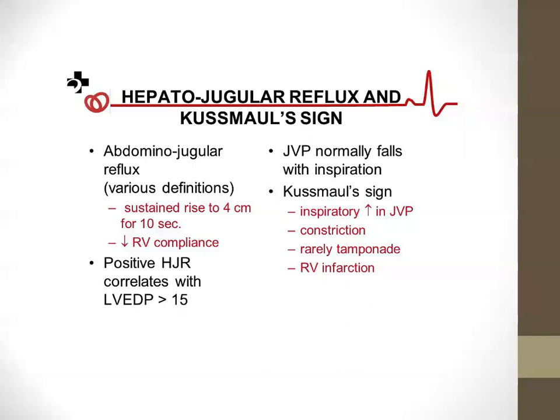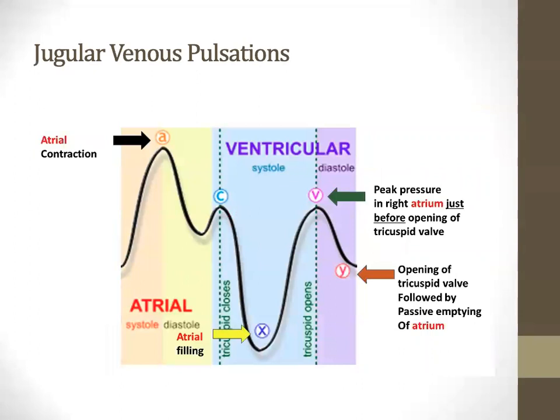Kussmaul's sign occurs in constrictive pericarditis, restrictive cardiomyopathy, and RV infarcts — conditions where RV compliance is reduced. Normally, inspiration decreases intrathoracic pressure, allowing greater blood flow into the thorax and greater RV filling, causing JVP to drop. But with these conditions, the RV can't expand adequately; blood still flows into the thorax, causing the JVP to paradoxically rise with inspiration — that's Kussmaul's sign.